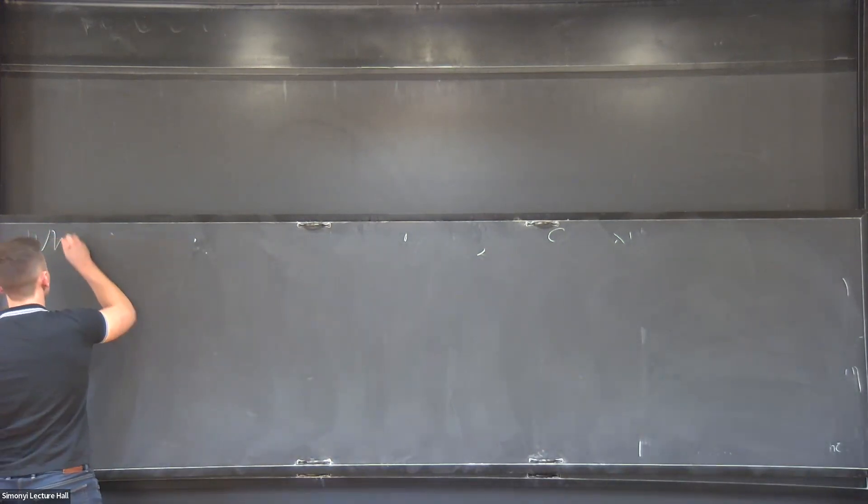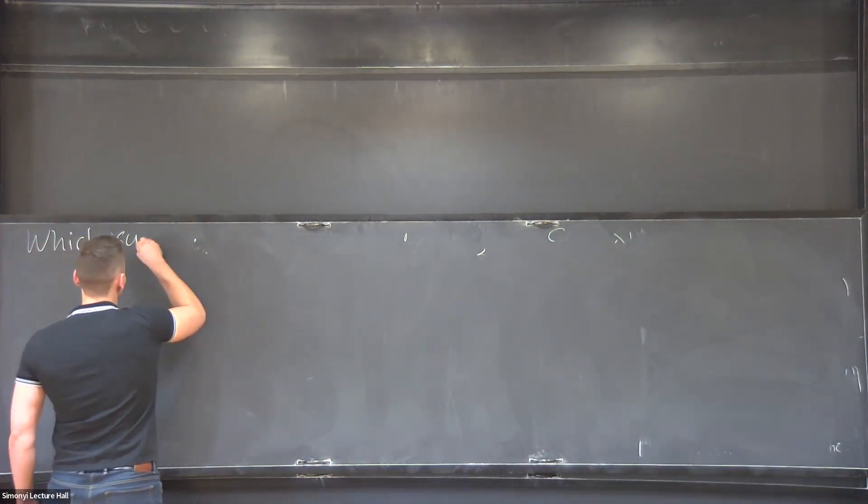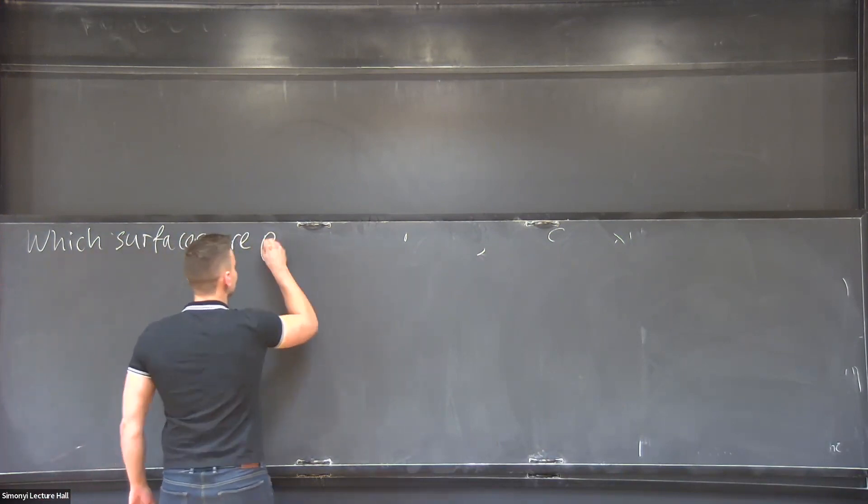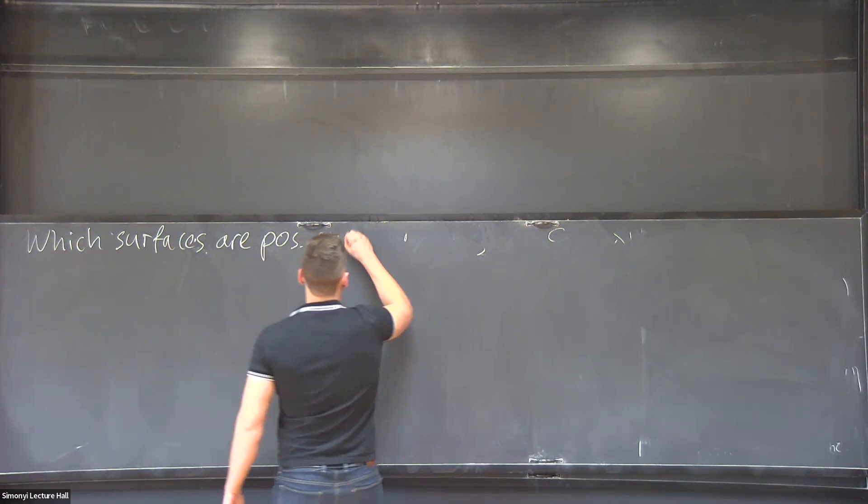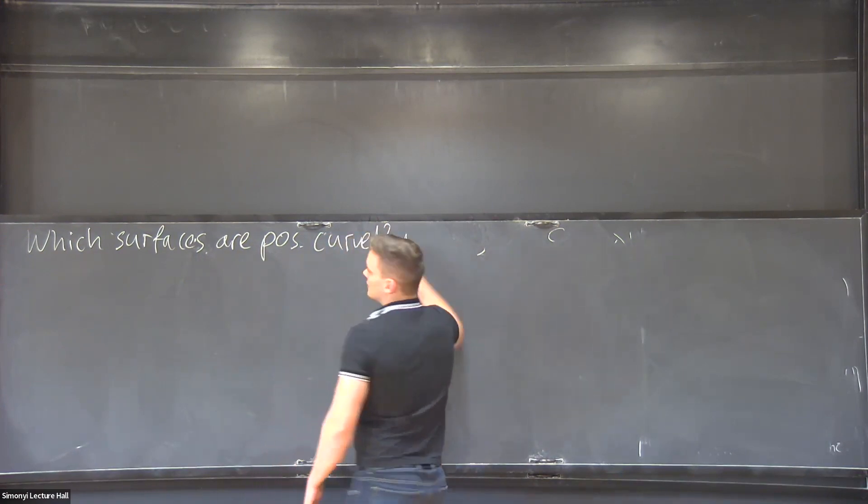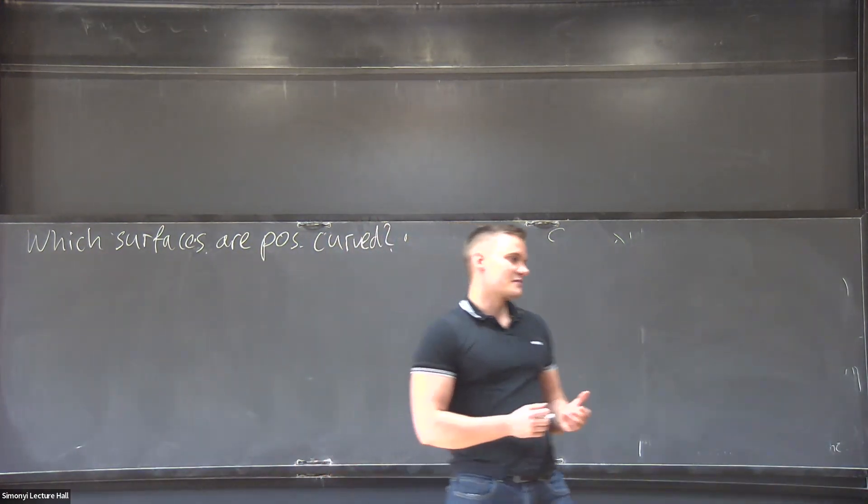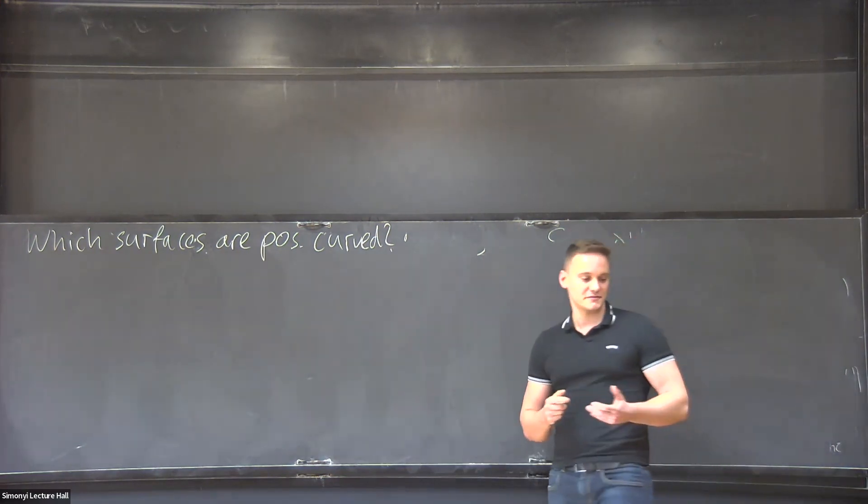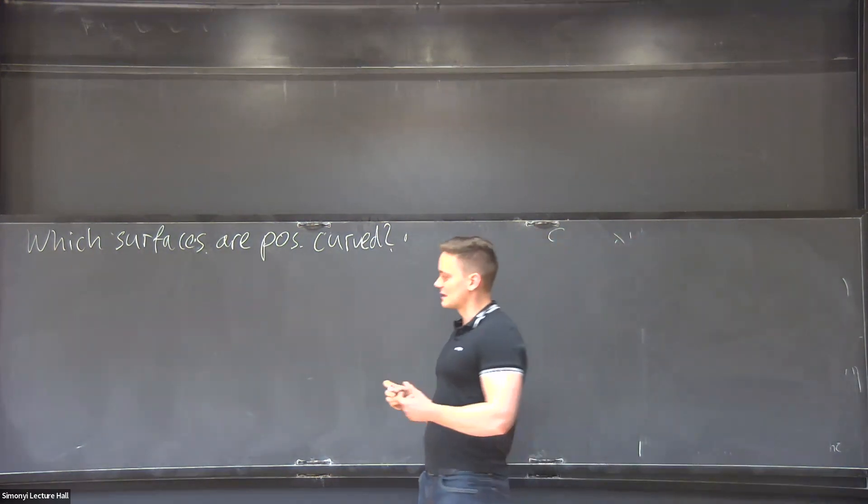Today we have Suvend Kirsch working on minimal slicing and reciprocations. So the question I want to focus on today is which surfaces or manifolds can be positively curved, and let's start directly with a couple examples.